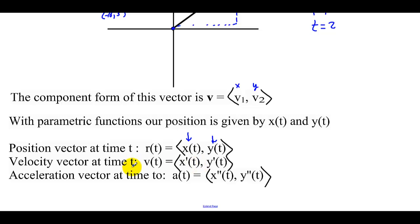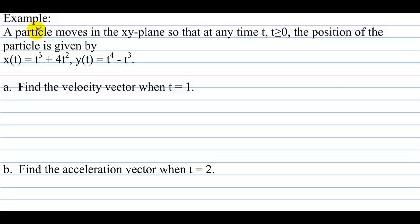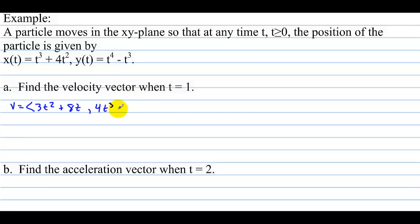The velocity vector is the derivative of the position, and the acceleration is the derivative of the velocity, just like normal. A particle moves in the xy plane so that at any time t the position is given parametrically. Find the velocity vector when t equals 1. The velocity vector is ⟨3t² + 8t, 4t³ − 3t²⟩. Evaluating at t = 1: 3 + 8 = 11 and 4 − 3 = 1, giving velocity vector ⟨11, 1⟩.